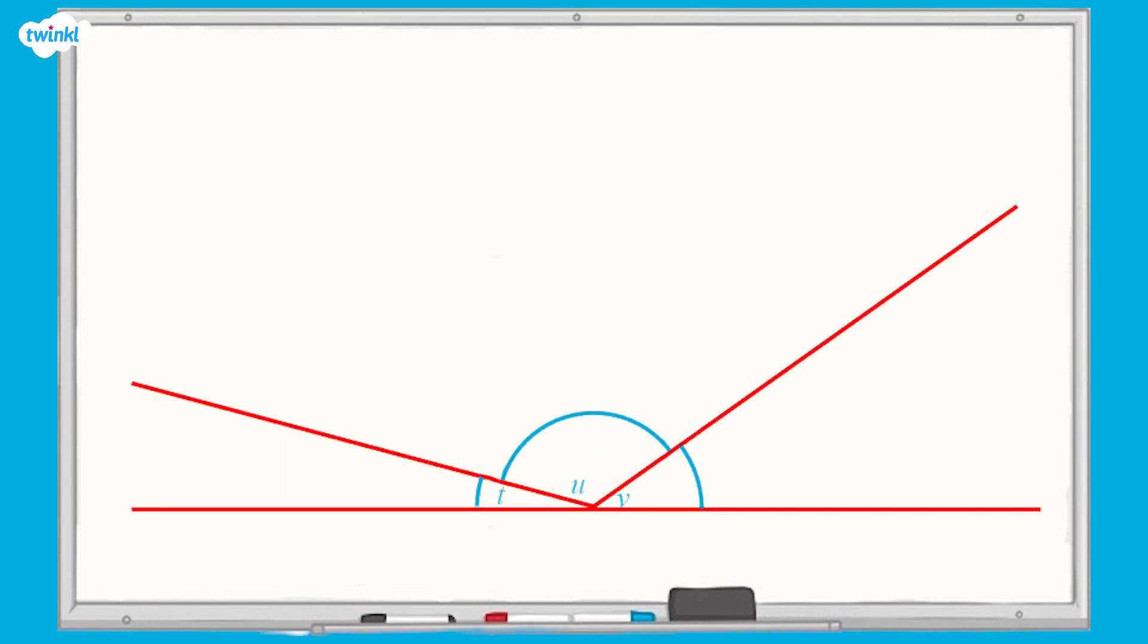Have a go yourself now. Use the protractor to measure the angles shown on our screen. Remember your estimates. This will mean you're less likely to read the wrong scale. You're going to see three pause screens with a question on each one. You can pause now and hit play when you're ready to try the next question.